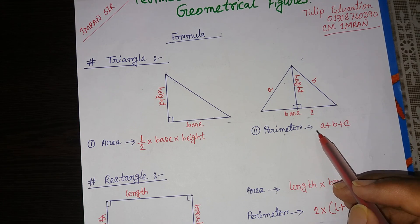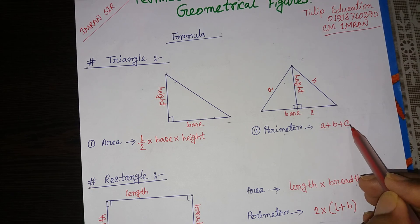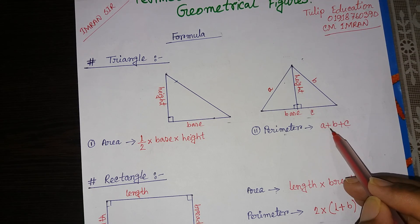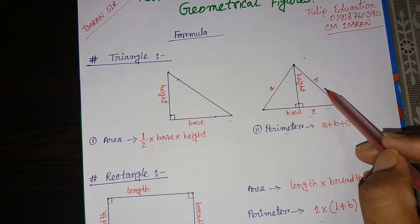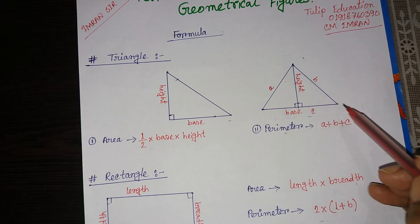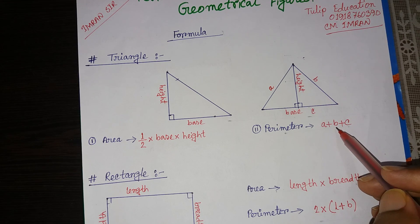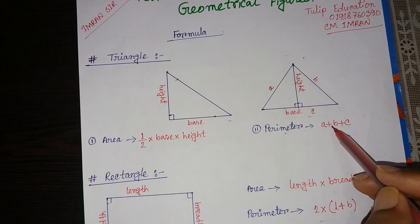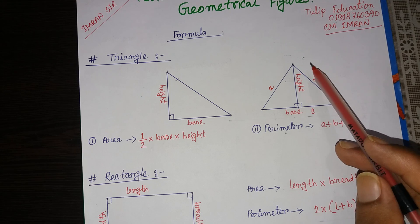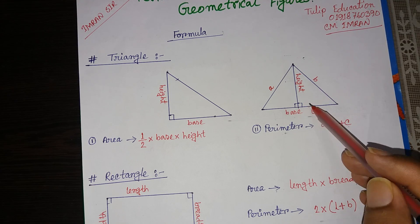So the area of a triangle is half multiplied by base multiplied by height. The perimeter of a triangle is a plus b plus c, where a, b, and c each represent one side. If we add the three sides of a triangle, we get the perimeter.